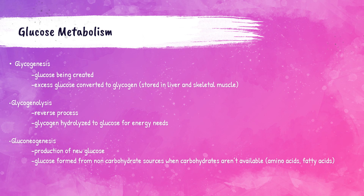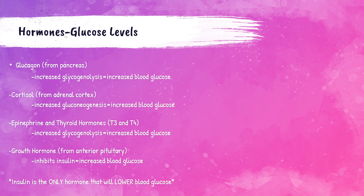When someone consumes carbohydrates, those carbohydrates are initially converted to disaccharides. Via their specific enzymes, these are then broken down into monosaccharides, absorbed by the intestines, and transported to the liver. In addition to insulin, there are counter-regulatory hormones that help maintain steady glucose levels, including glucagon, cortisol, epinephrine, growth hormone, and thyroid hormones T3 and T4.